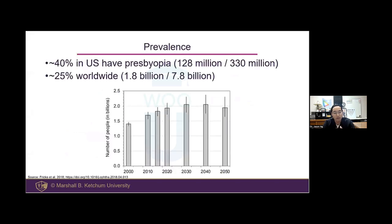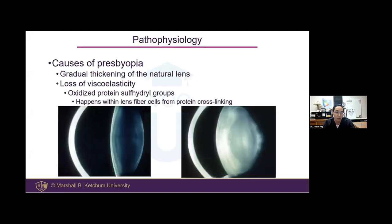Presbyopia has a huge prevalence — 40% in the U.S. — and it's continuing to increase through the end of the decade. Based on this data it may plateau, but still millions and millions of people are looking for solutions and already dealing with it.